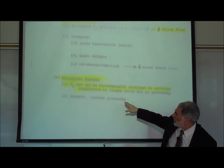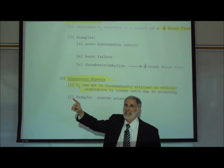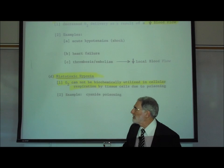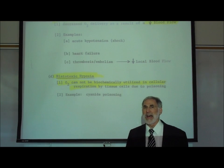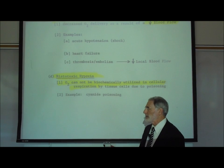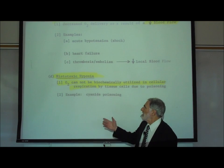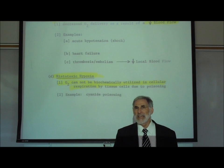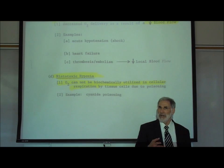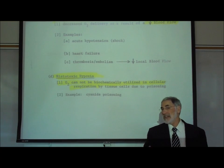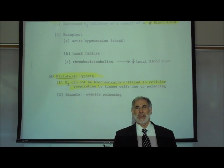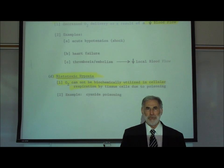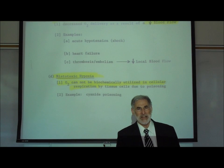The fourth category is called histotoxic hypoxia. The word contains 'toxic,' meaning poison. In histotoxic hypoxia, the problem is that cellular respiration isn't occurring. Oxygen is available but it can't be utilized by the cells of the body because cellular respiration is not occurring normally. An example is cyanide poisoning — cyanide is an enzyme inhibitor that inhibits an enzyme needed in cellular respiration. In histotoxic hypoxia, the lungs are working, the red blood cells are carrying oxygen, and the heart is pumping, but the cells have been poisoned and are unable to use that oxygen to make ATP.